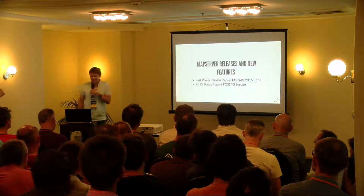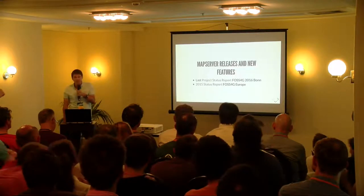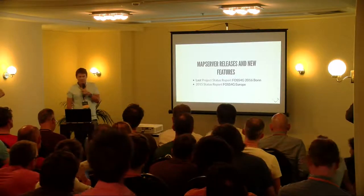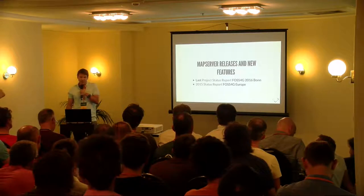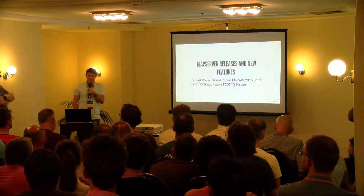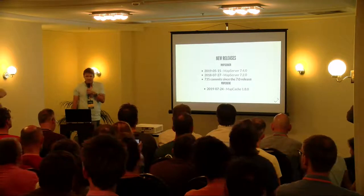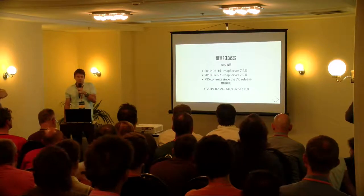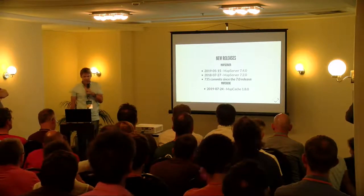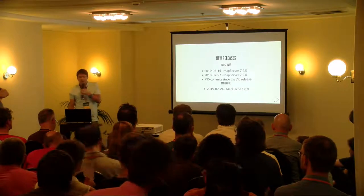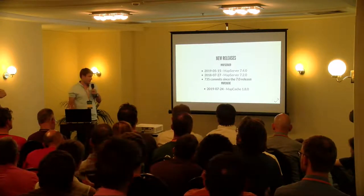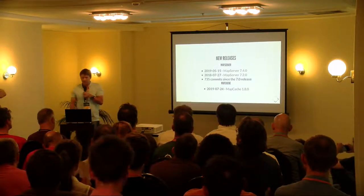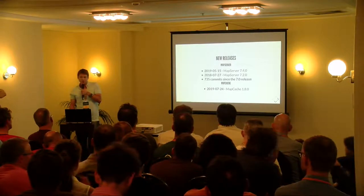Moving on to releases and new features. It's been a few years since the last status report in Bonn — about three years. Since the last report there have been two major releases, 7.2 and 7.4, building on top of the version 7 release. There's also been a new release of MapCache this year. MapCache is kind of in the MapServer family, allowing you to cache your WMS services, with more developments on MapCache recently.